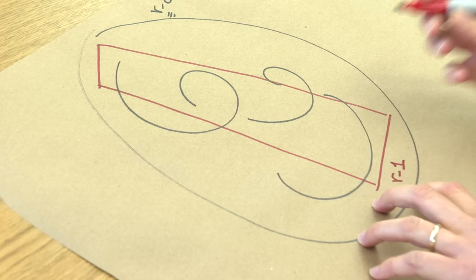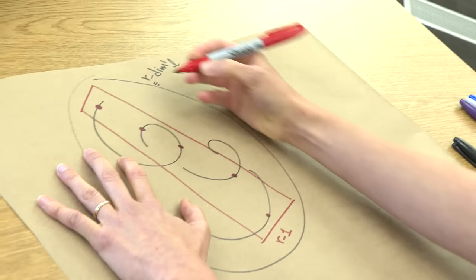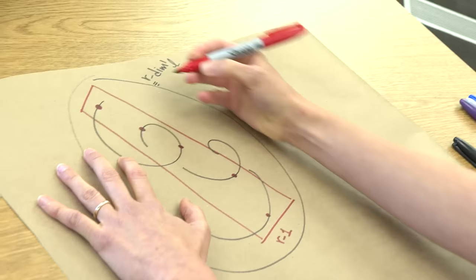So I take a random horizon in this space. So this is something of dimension R minus 1. So it's just some horizon and every time the curve twists around, it meets the horizon in a new point.